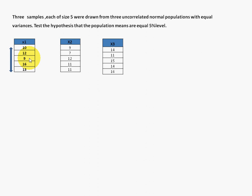Remember the wording: 'within the sample' means the variance of observations within the same sample — for example, the lowest value is 9 and the highest is 16, so the difference is 7. 'Between the samples' means the variation between samples x1 and x2, x1 and x3, or x2 and x3.